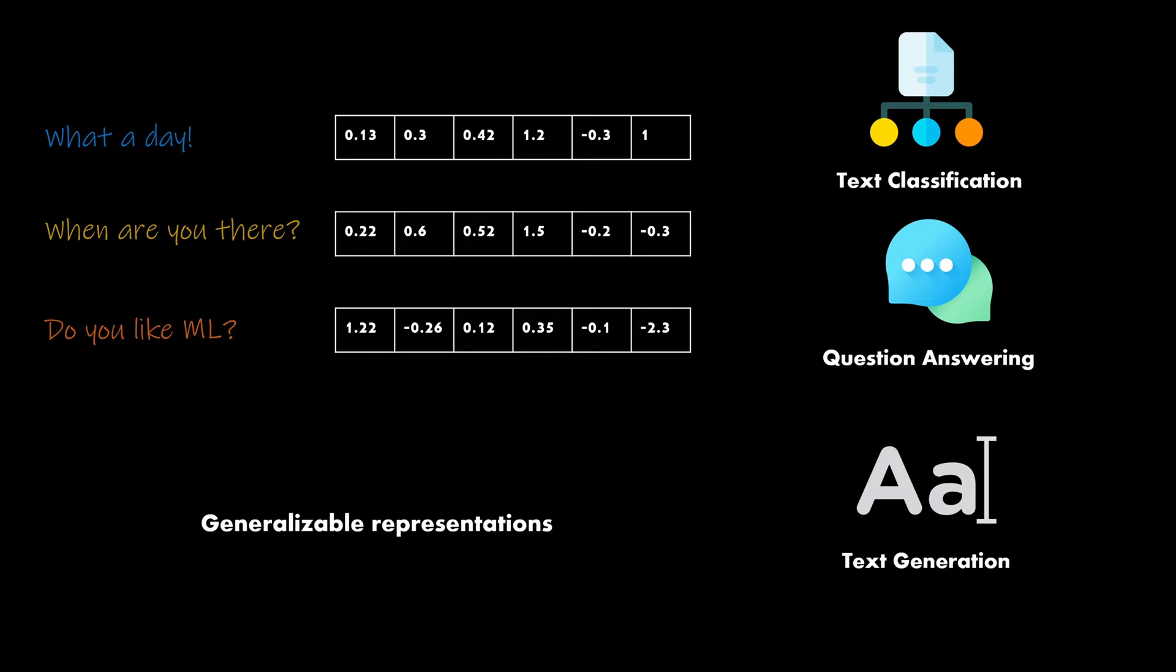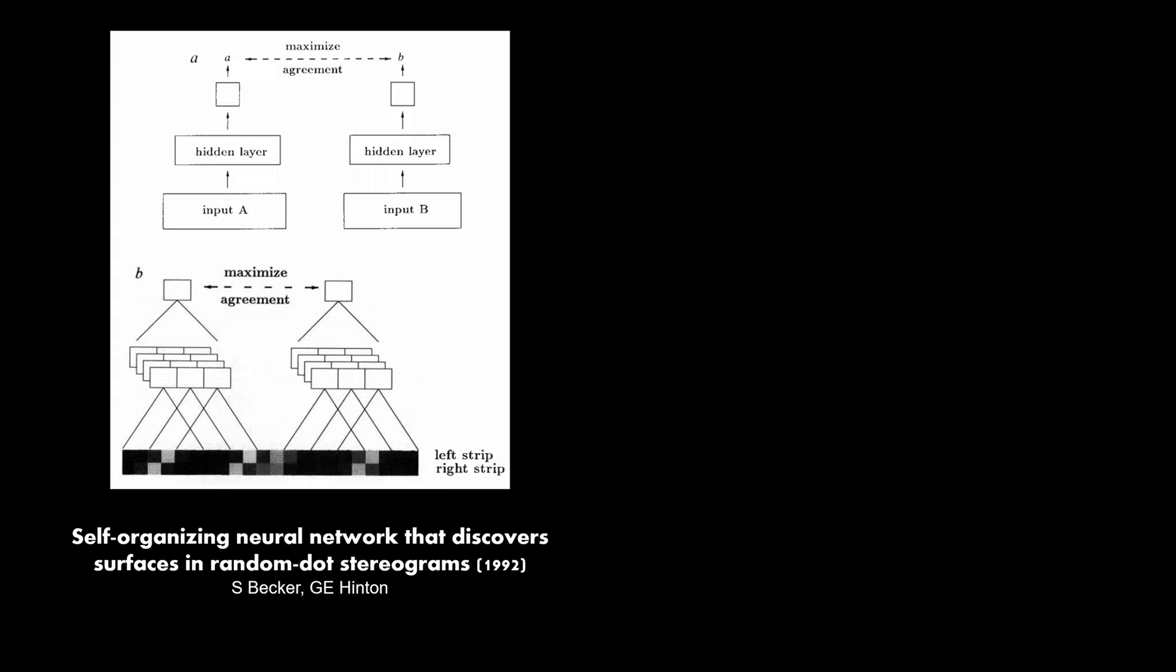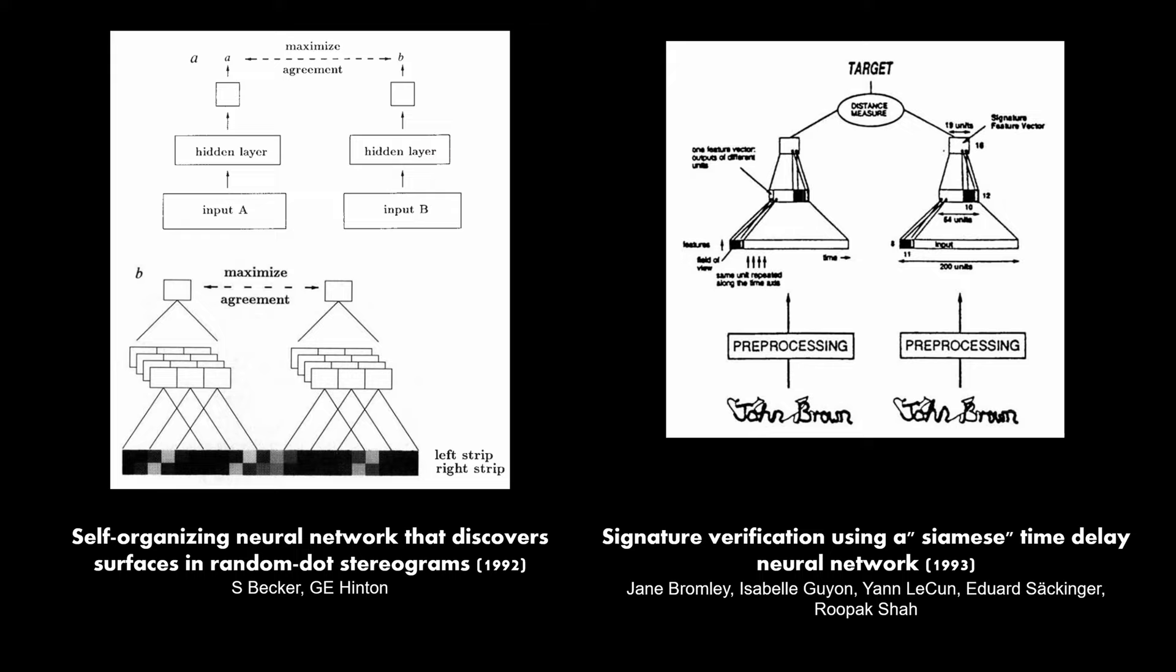The idea of contrastive learning has been out there for a long time already and dates back to 1992. A publication by Becker and Hinton shows for the first time how to learn in a contrastive sense using pairs of data as input. Another group of popular researchers presented Siamese networks, which also have the comparison of data points at the core. Nowadays there are many popular frameworks for contrastive learning, of which I've picked out two that I'll quickly want to talk about here.